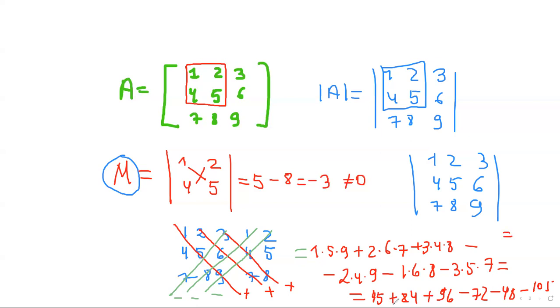So 1 times 5 times 9 is 45 plus 2 times 6 times 7 is 84 plus 3 times 4 times 8 is 96 minus 2 times 4 times 9 is 72 minus 1 times 6 times 8 is 48 minus 3 times 5 times 7 is 105. By adding and subtracting, we are going to get 0.